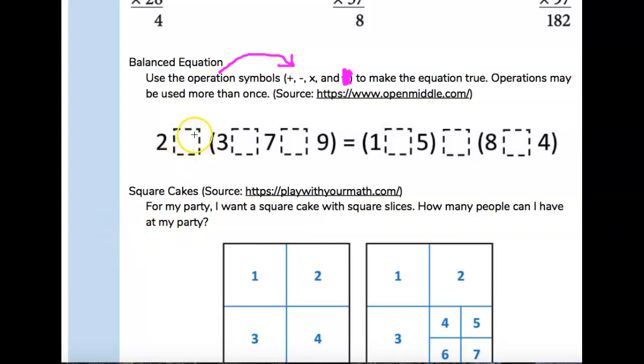So let's look at this. So 2 times 3 plus 7 plus 9 equals 1 plus 5, plus 8 times 4.